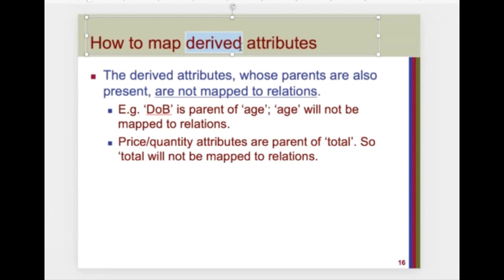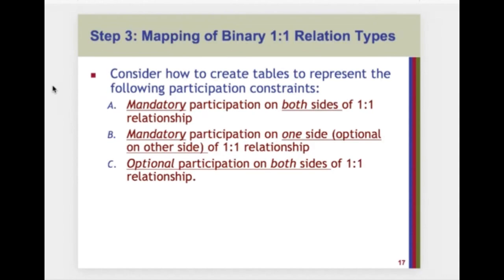Derived attributes are not stored because they change frequently. For example, your GPA is calculated from your course grades each time it is displayed — it is not stored in the database. For mapping binary one-to-one relationships, there are three basic types based on participation: both sides mandatory, one mandatory and one optional, or both sides optional.